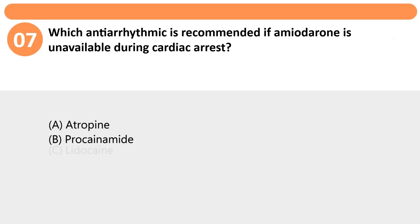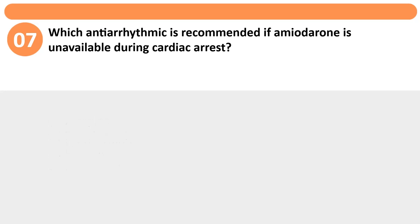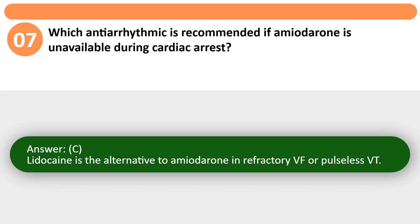Which antiarrhythmic is recommended if amiodarone is unavailable during cardiac arrest? A. Atropine. B. Procainamide. C. Lidocaine. D. Adenosine. Answer: C. Lidocaine is the alternative to amiodarone in refractory VF or pulseless VT.